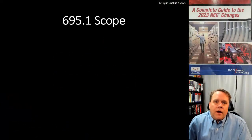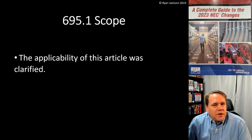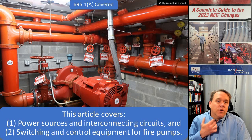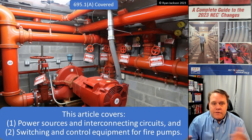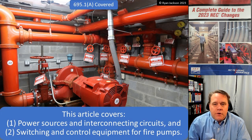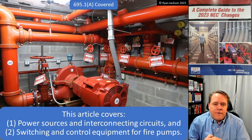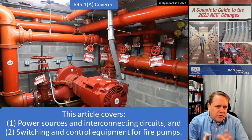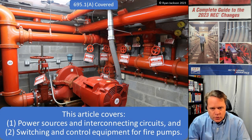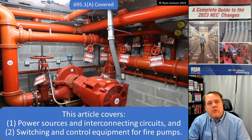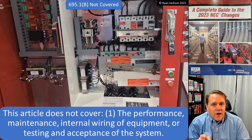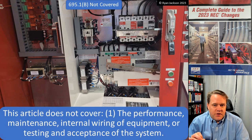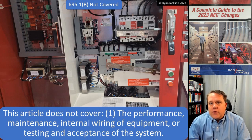Article 695.1 covers the scope. The applicability was clarified: this article covers power sources and interconnecting circuits for the fire pump, and switching and control equipment for the fire pump. In the picture we have the fire pump, source conductors going to it, the fire pump motor itself, the fire pump transfer switch, the fire pump controller, and the alternate source.